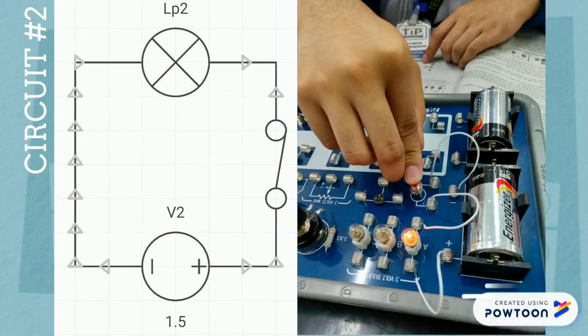In the second circuit, the current did not go directly to the light bulb due to the presence of the switch that blocks the current.